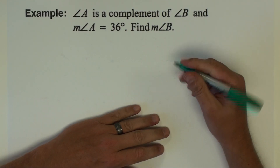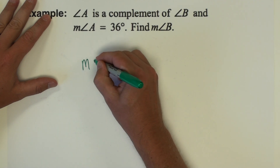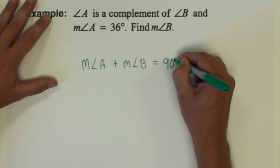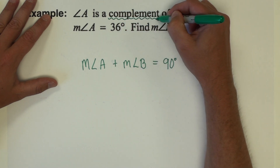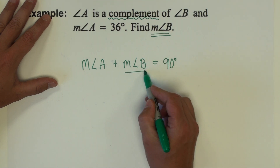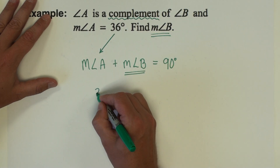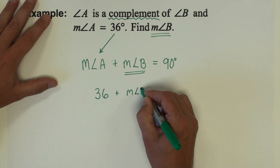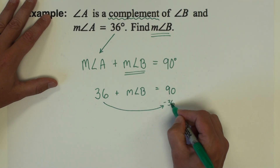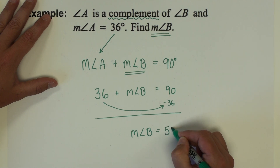This next example problem says that angle A is a complement of angle B, which means the measure of angle A plus the measure of angle B equals 90 degrees. If they are complements of each other they're going to sum to 90. We want to find the measure of angle B when the measure of angle A is 36. So we put 36 in: 36 plus the measure of angle B equals 90. Subtract 36, so the measure of angle B is 54 degrees.